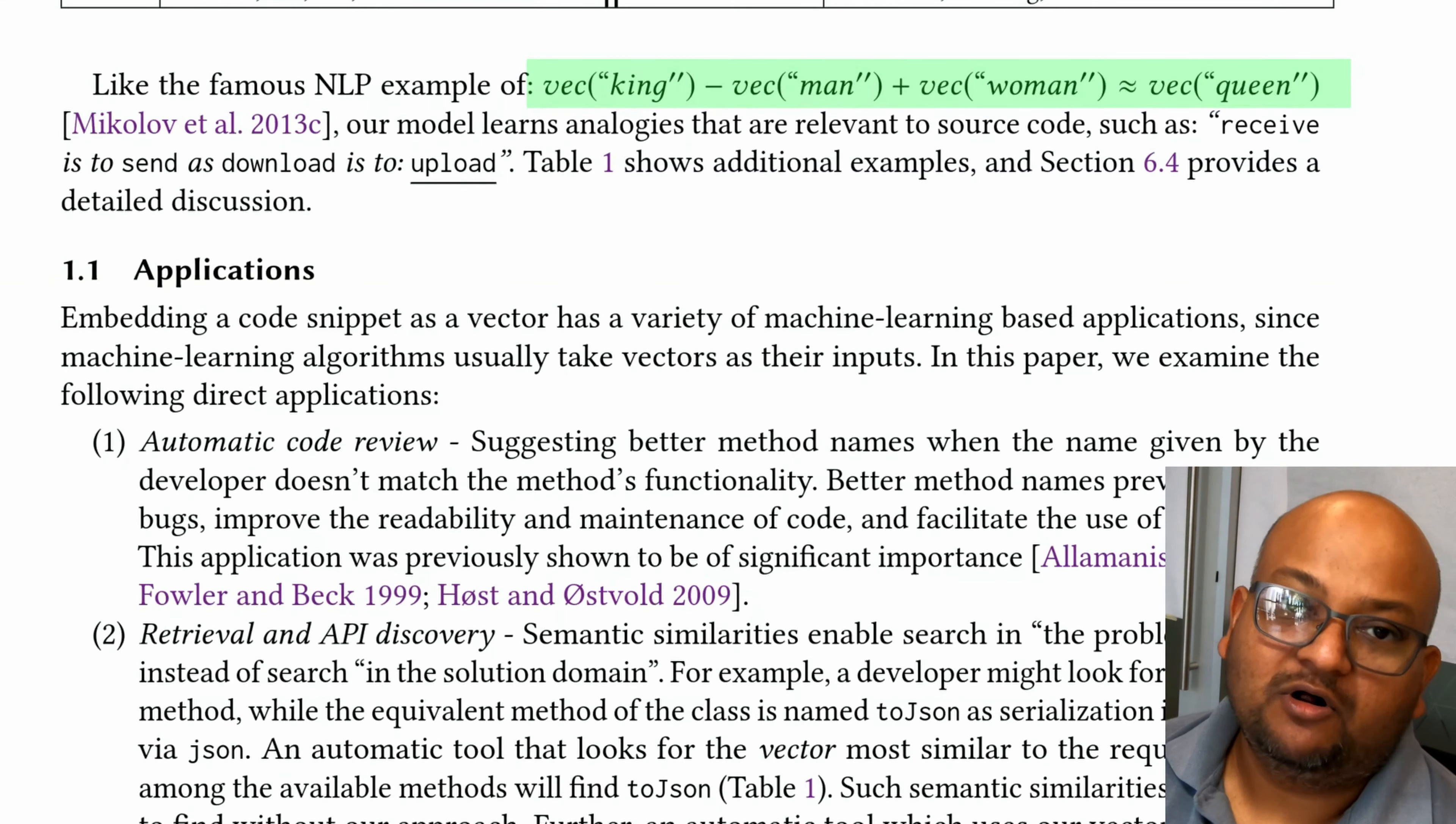That technique was called word2vec. What I want to look at today is another technique that is inspired by this one called code2vec, which tries to map snippets of code to vectors and then tries to extract meaning out of those snippets of code and tries to give those snippets of code good meaningful names.